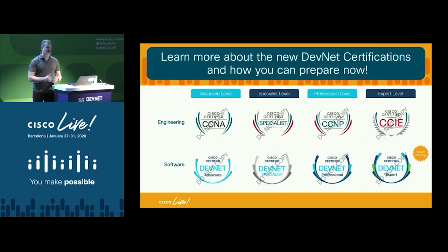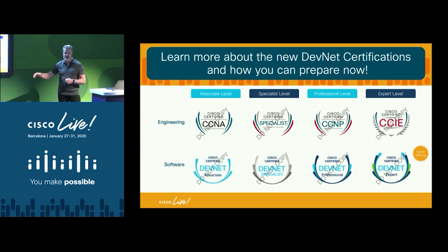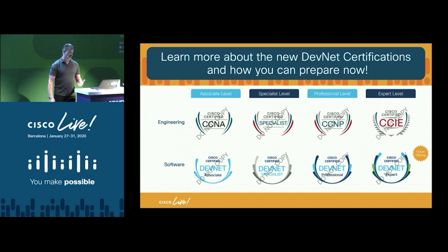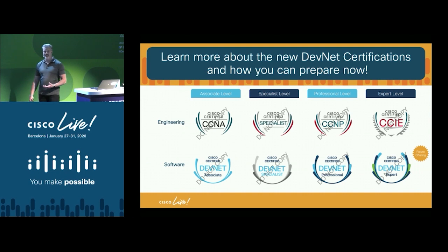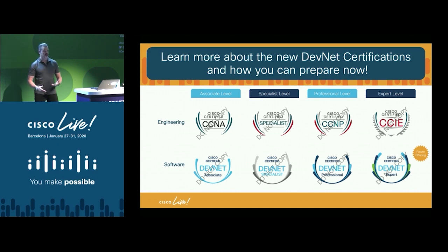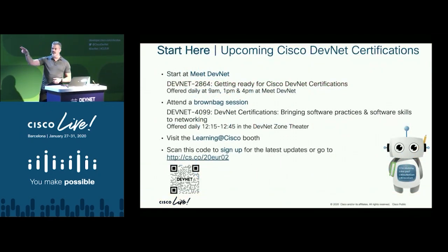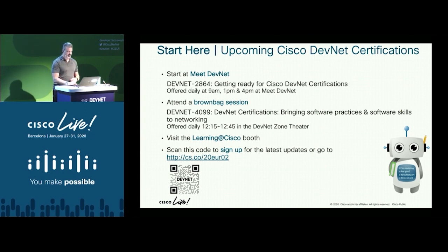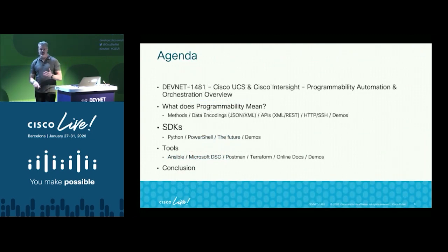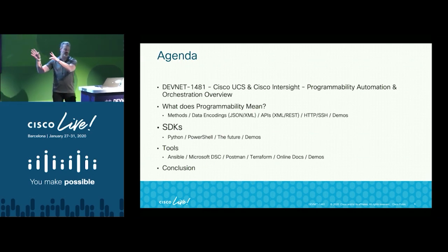If you haven't heard yet, DevNet has certifications coming out February 24th — DevNet Associate, Specialist, Professional, and Expert. There is a DevNet Professional Certification for Data Center Automation, and about a third of the questions are on UCS and Intersight programmability. I know that because I wrote most of them. For more on certifications, the DevNet zone is talking about them every couple of hours.